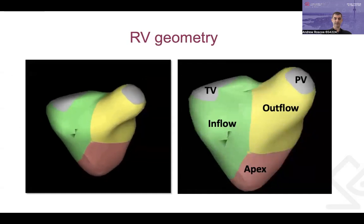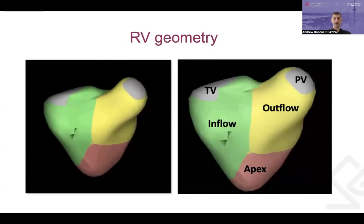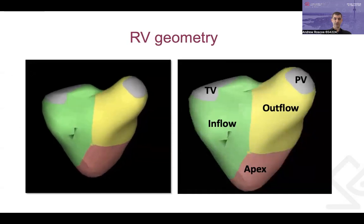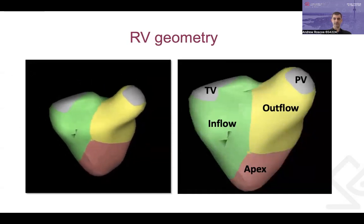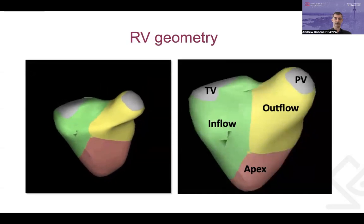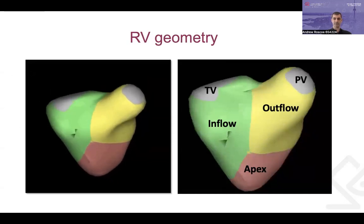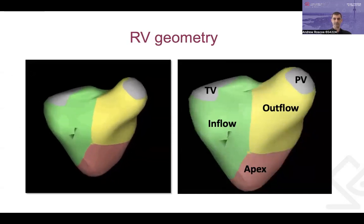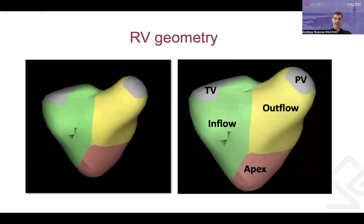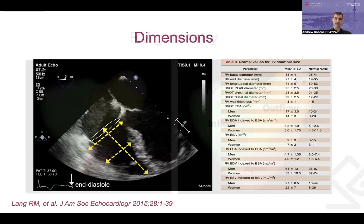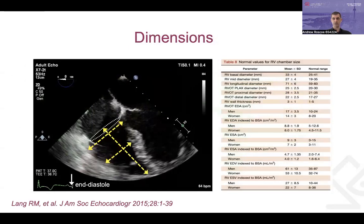Looking at RV geometry — we all know the RV is quite an odd shape. I equate it to a narrow teapot: the tricuspid valve is the inflow and the outflow is the spout going out through the pulmonary valve. It's useful to know the normal values for a normal-sized right ventricle so that we can spot abnormalities very quickly.